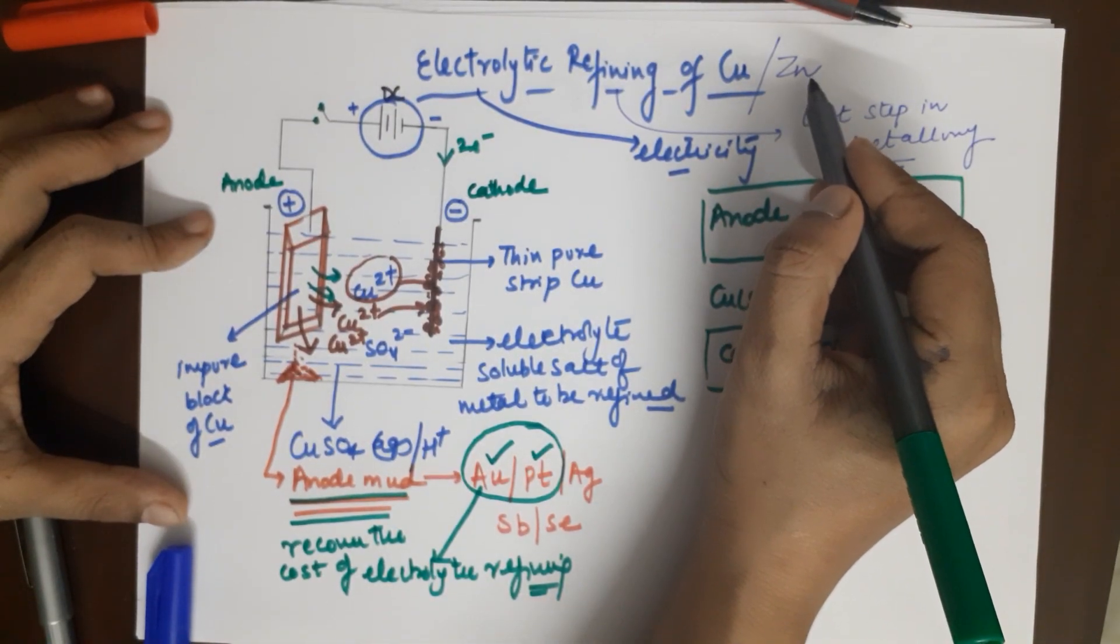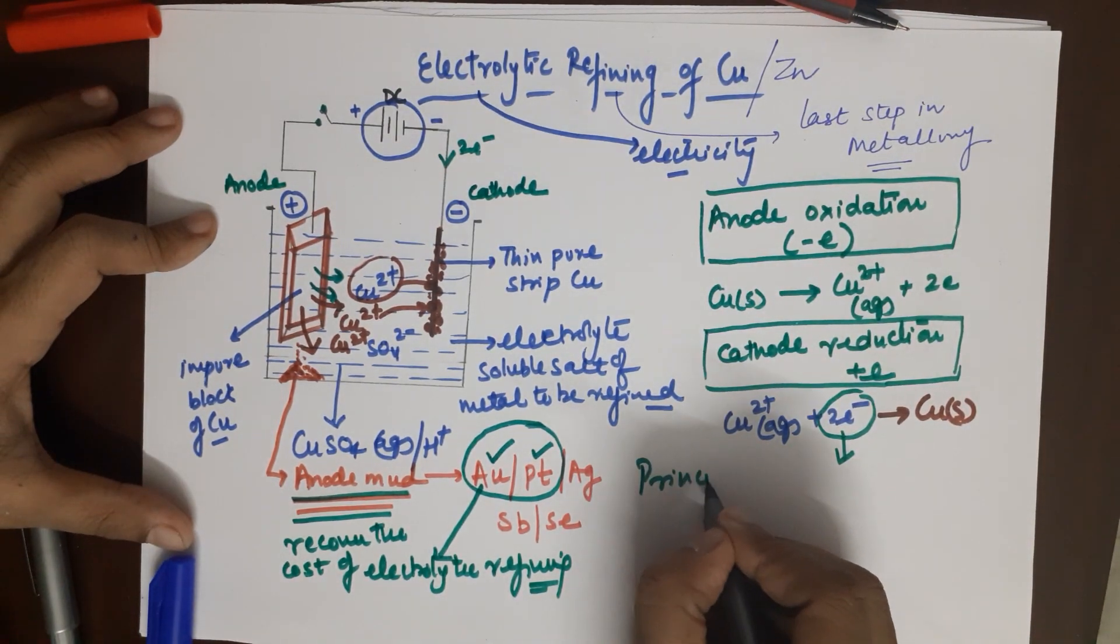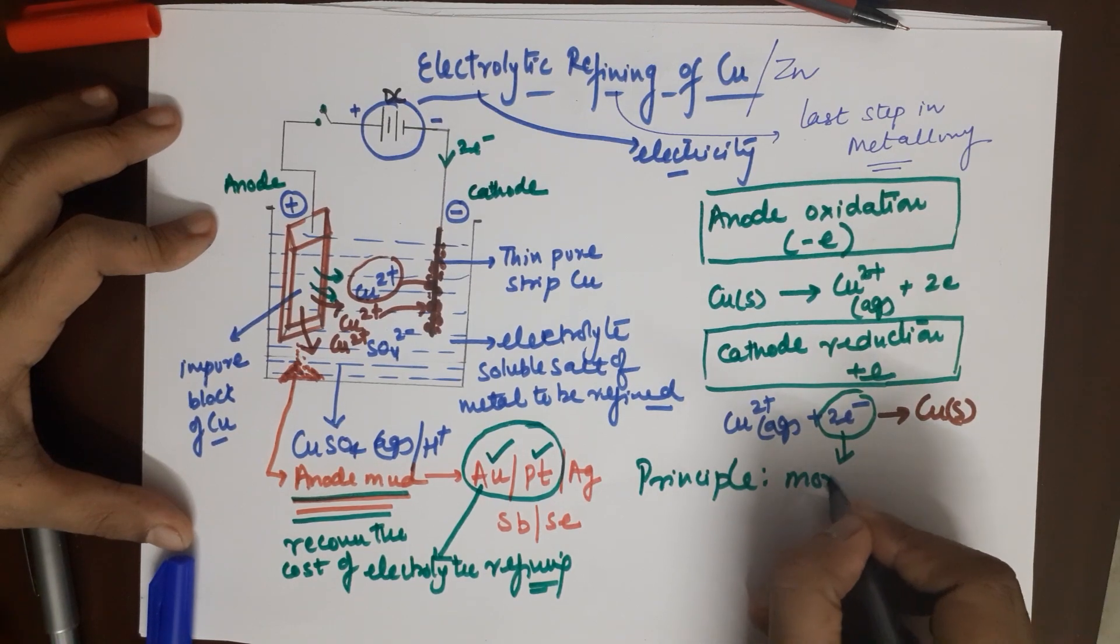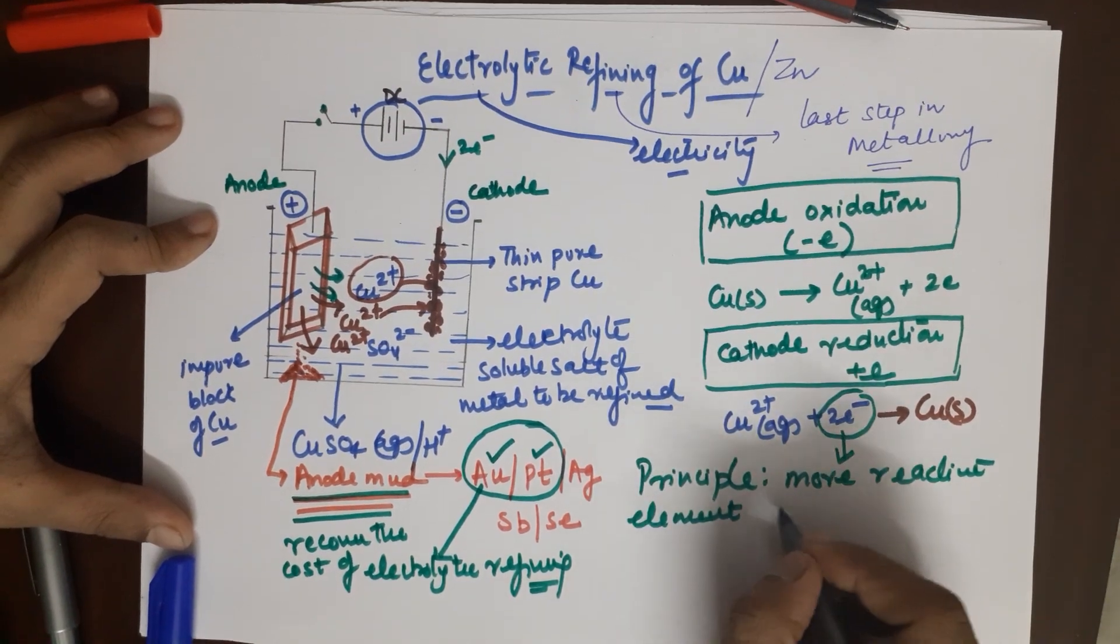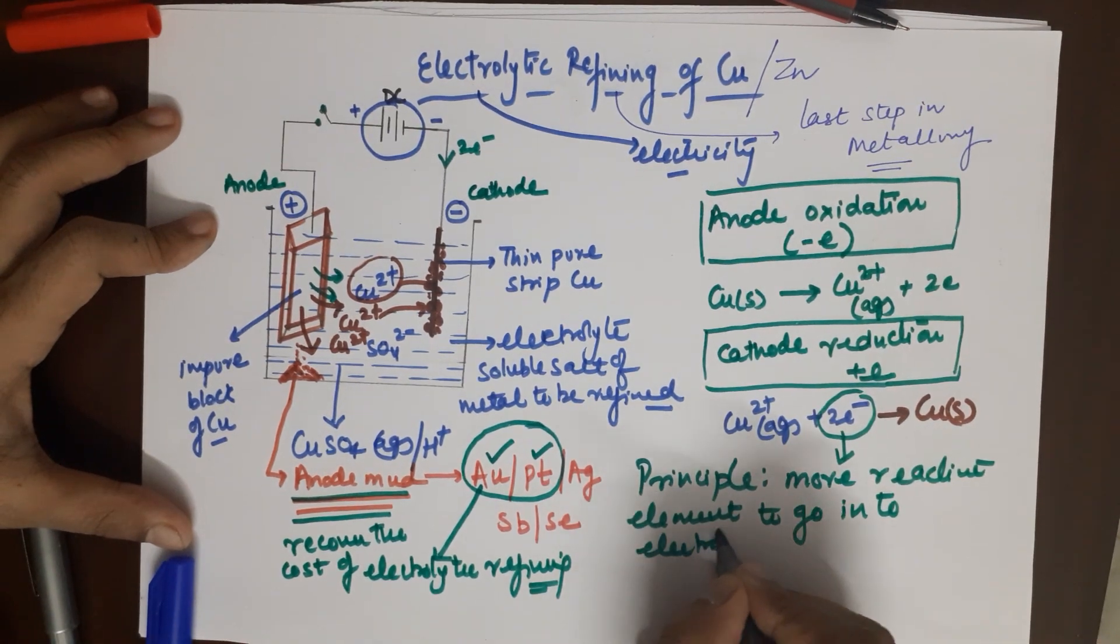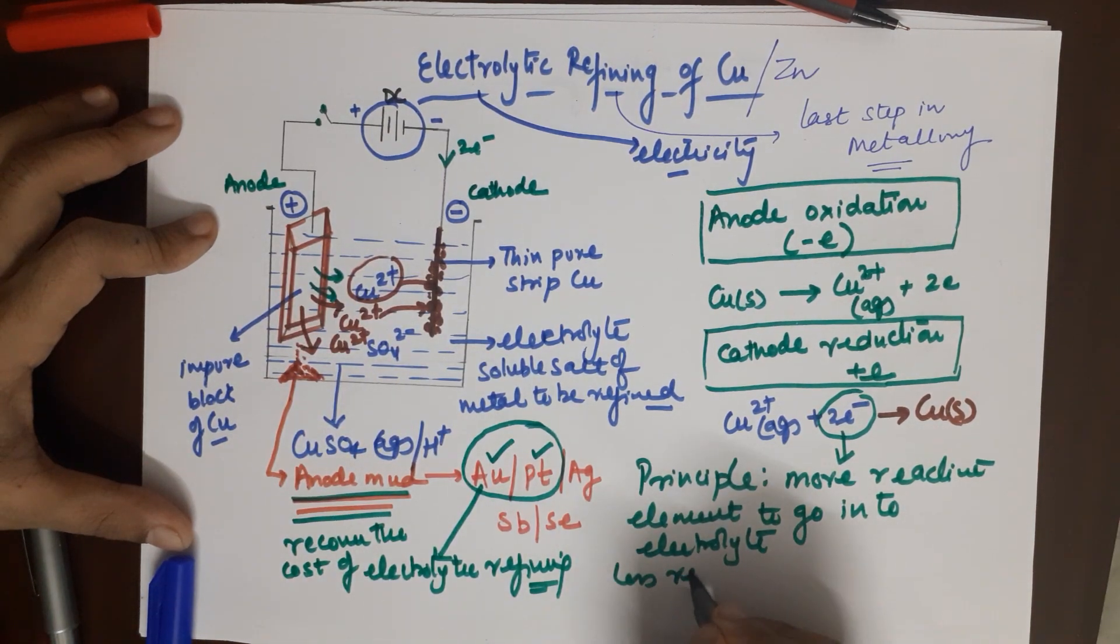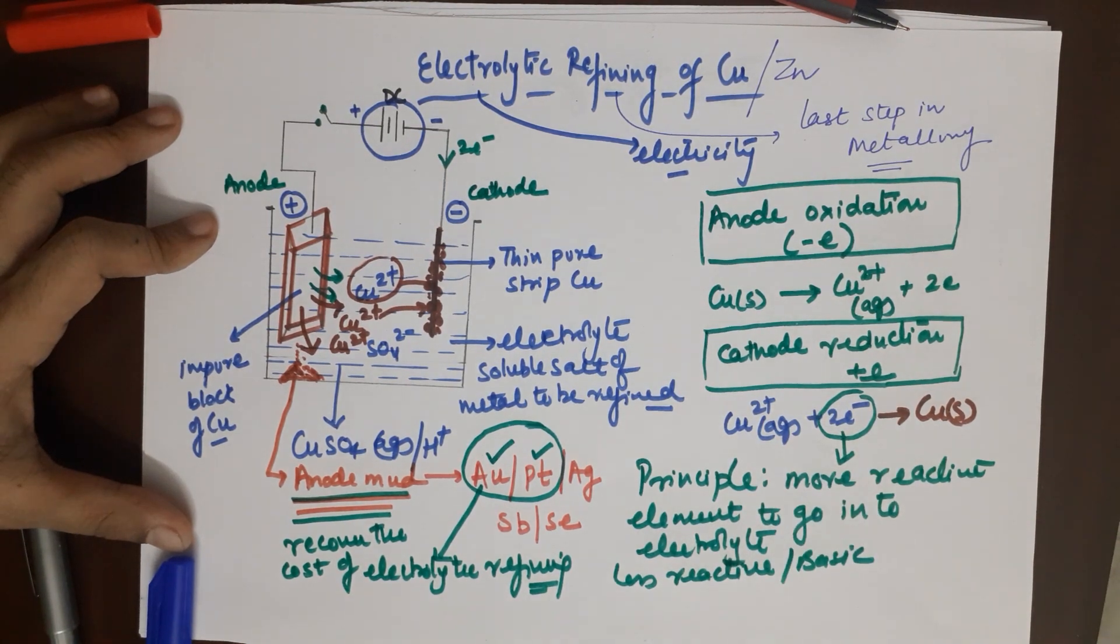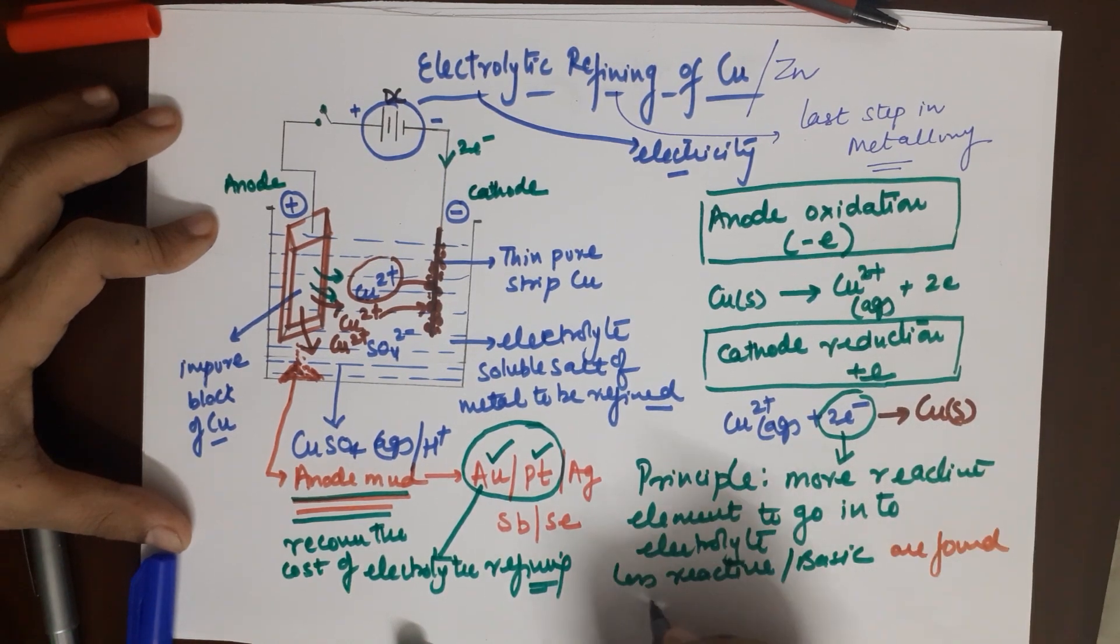For electrolytic refining, the basic principle involved is more reactive elements you actually want to go into electrolytes, like zinc, like copper ions, while less reactive, also called less basic, do not go into solution and are found in the anode mud.